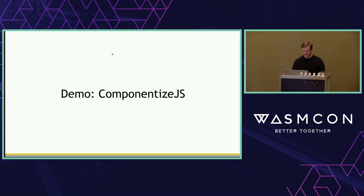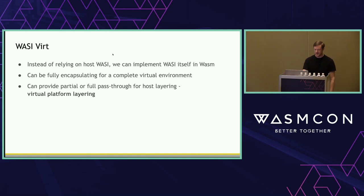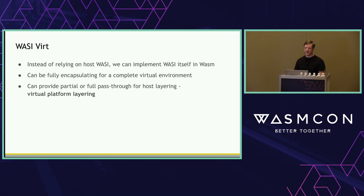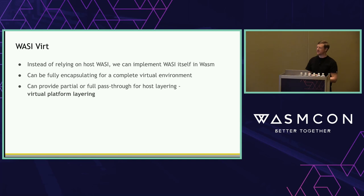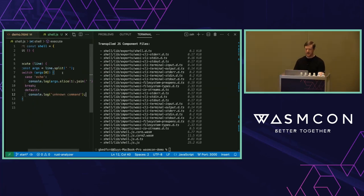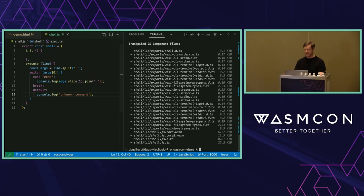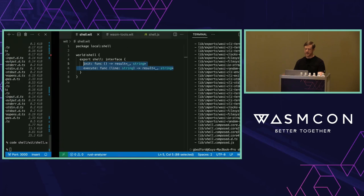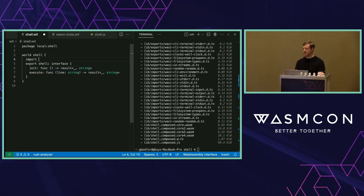When I refresh, I don't have any other commands, but I'm running JavaScript in SpiderMonkey in the browser with my echo command working. One more demo: WASI-virt. Up to now I've been using preview2-shims, which is a browser implementation of WASI. Instead, I'll use WASI-virt, which is a WASM-first implementation of WASI. Rather than running on the host WASI in the browser, you can actually build that WASI implementation in — all you need is the standard API, and you can bring the file system and other things up into the virtualization layer. This is the virtual platform layering story.